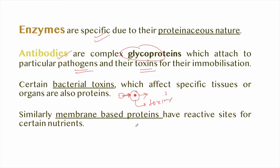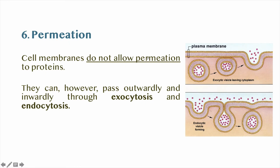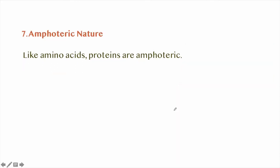Cell membranes have reactive sites for certain proteins. Cell membranes do not allow free permeation of proteins; they can, however, pass outwardly and inwardly through exocytosis and endocytosis. Normally, every cell synthesizes its own proteins from amino acids. Like amino acids, proteins are amphoteric — they have both positively charged and negatively charged ends.